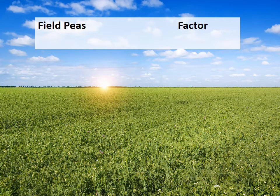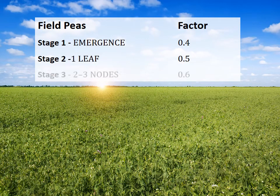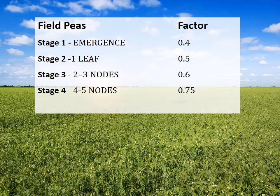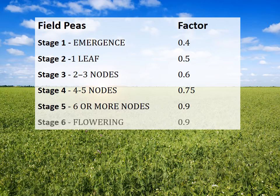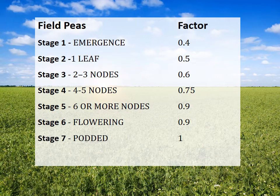The first stage is emergence, with a loss factor of 0.4. The second stage is leaf, with a factor of 0.5. Stage three is two to three nodes, with a factor of 0.6. Stage four is four to five nodes, with a factor of 0.75. Stage five is six or more nodes, with a factor of 0.9. Stage six is flowering, also with a factor of 0.9. Stage seven is potted, with a factor of one. And stage eight is in the swath, also with a factor of one.